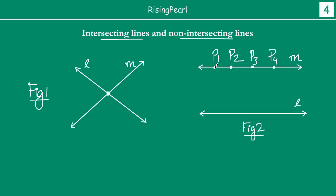When we say the distance of point P1 from line L, what we mean is you have to drop a perpendicular from point P1 onto line L. Similarly, from P3 we drop a perpendicular straight onto line L. The unique thing we notice is that any point on line M will be at the same distance D from line L — all these points are equidistant from line L. This means they will never meet.